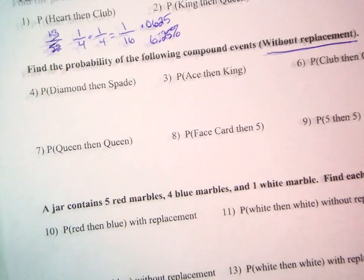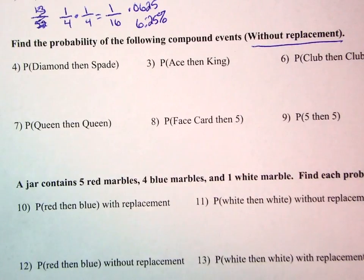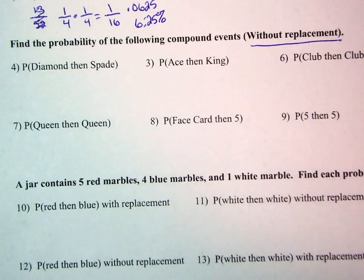Let's look at an example without replacement. Without replacement tells me I am not putting the card back into the deck. Once I draw it, it stays out.